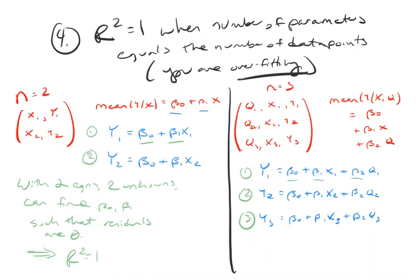When you solve for three equations, three unknowns, you can find all the parameter estimates such that the residuals are zero. So the residuals are zero, which implies that r squared is equal to one.